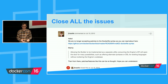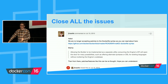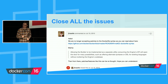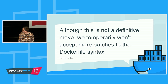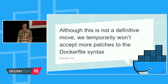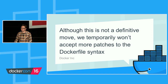That has some really interesting advantages in the sense that, unlike maybe some of the other APIs in Docker, all of this stuff is backwards compatible. You wrote a Dockerfile a year ago, it still works. That stability has meant these things have become quite useful. Docker said this is not a definitive move — not frozen forever — they temporarily won't accept more patches to the Dockerfile syntax, and that's been true for about a year. Given Docker's age, that's quite a while.